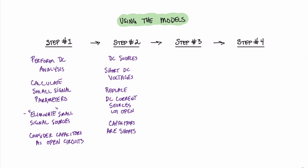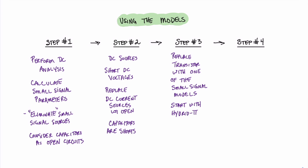Once we've accomplished all these steps in step number two, we can move on to step number three. Step number three is simple — all we're going to do is replace the transistor with one of the small signal equivalent models. In most cases, it's worth trying the hybrid pi model first, and if the circuit analysis of that model is difficult, then you can move on to the T model. As you gain more experience, you'll start to understand which types of circuits are easier to solve with the T model than they are with the hybrid pi.